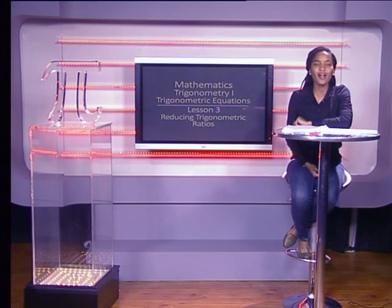Hello, and welcome to this lesson on reducing trigonometric ratios. Reductions are, in essence, converting the ratios of any angle into ratios of angles that lie between 0 and 90 degrees. After these steps, we can use special angles to get numeric answers for our expressions. We will be using the CAST diagram to help us do this.